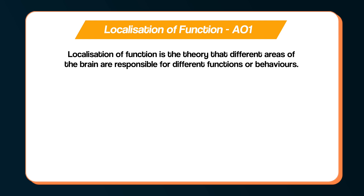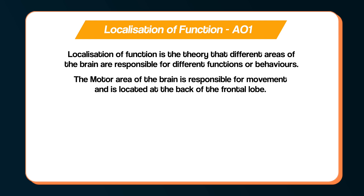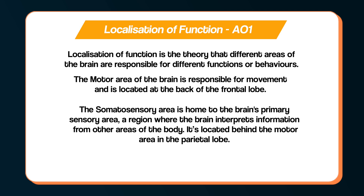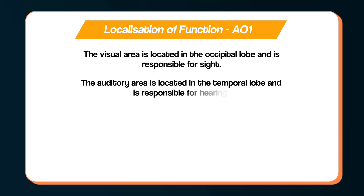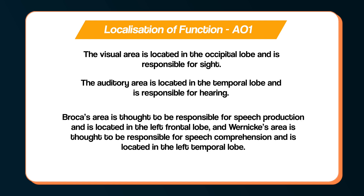You could then identify and describe each of the areas of the brain thought to be localized. The motor area is responsible for movement and is located at the back of the frontal lobe. The somatosensory area is the brain's primary sensory area, interpreting information from other areas of the body, located behind the motor area in the parietal lobe. The visual area is located in the occipital lobe and is responsible for sight. The auditory area is located in the temporal lobe and is responsible for hearing. Broca's area is thought to be responsible for speech production and is located in the left frontal lobe. Wernicke's area is thought to be responsible for speech comprehension and is located in the left temporal lobe.